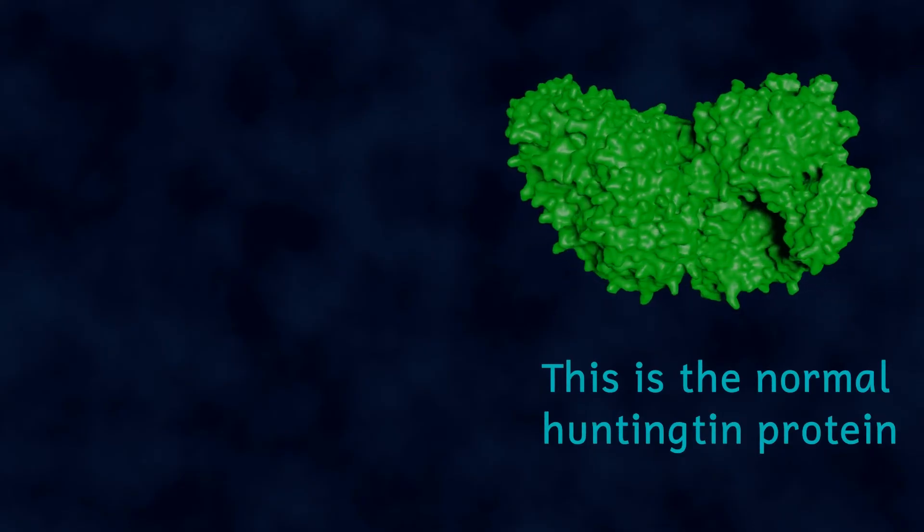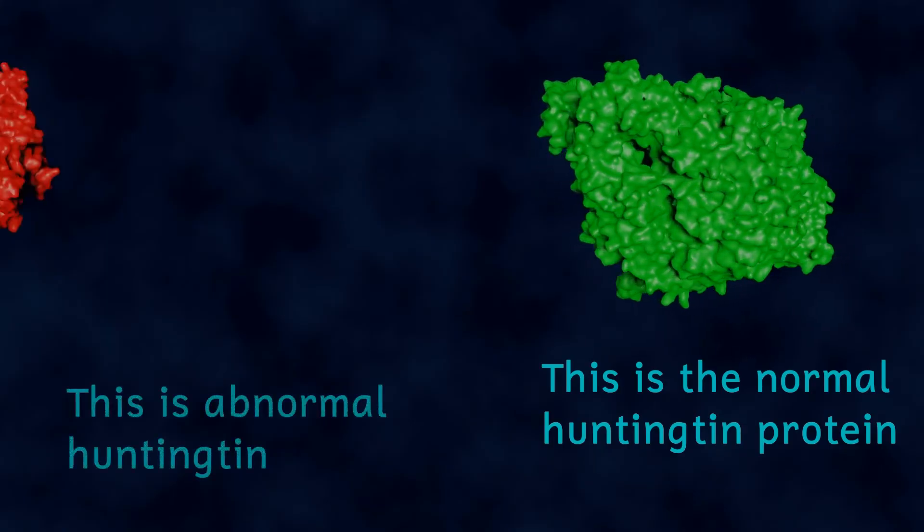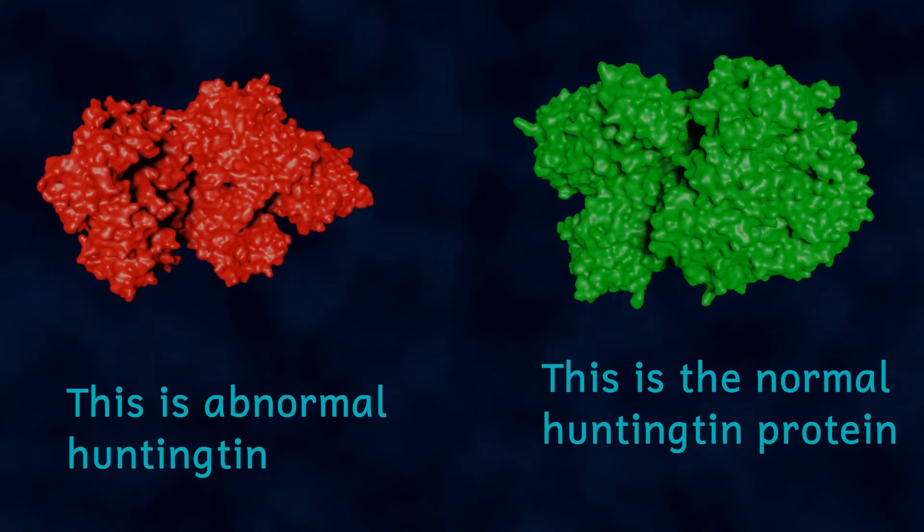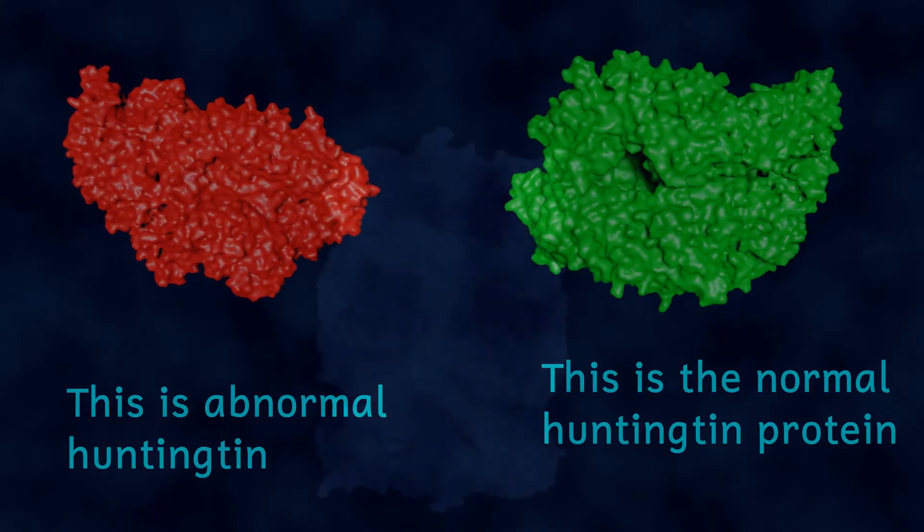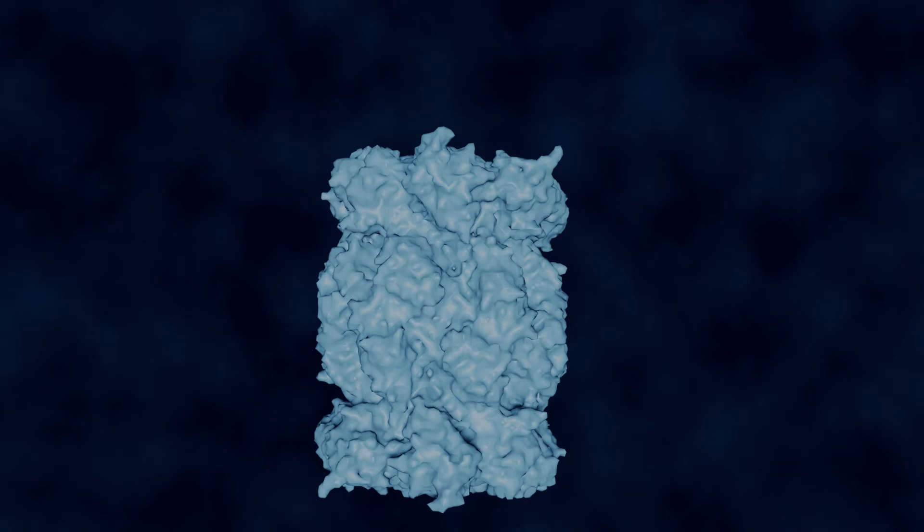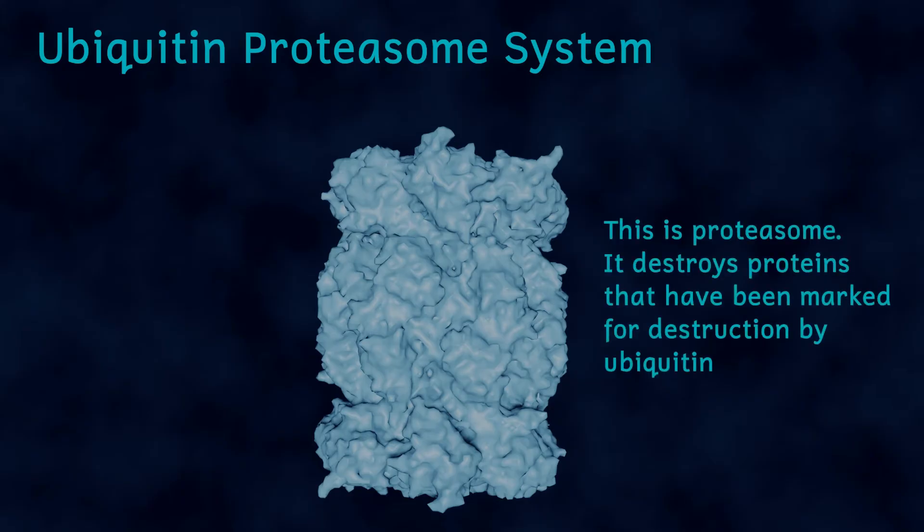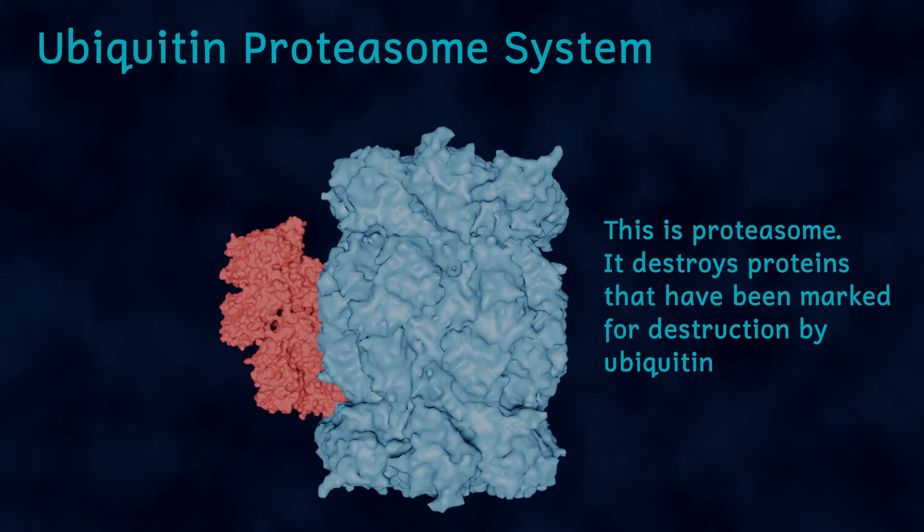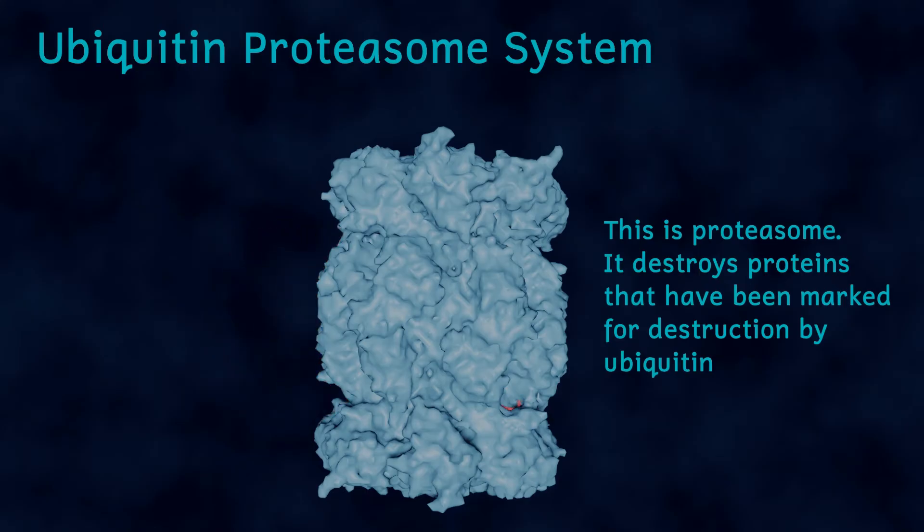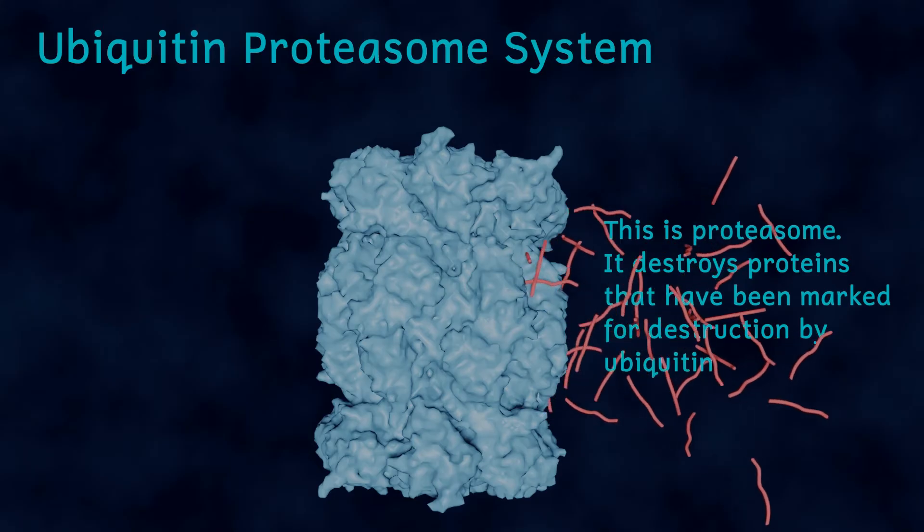Firstly these Huntington proteins which have been made with the extra glutamine molecules fold incorrectly and so they haven't got the right shape. Our cells have got a mechanism for dealing with wrongly shaped proteins and this is called the ubiquitin proteasome system or UPS and I'll make a separate video about this because it's fascinating. And this system destroys these wrongly shaped proteins firstly by breaking them into fragments.